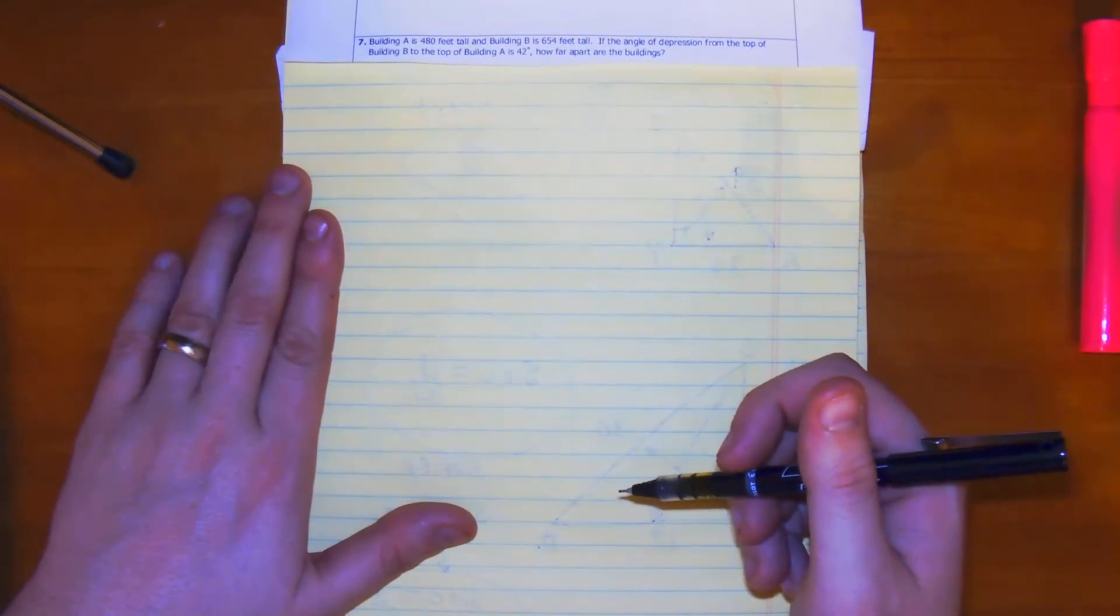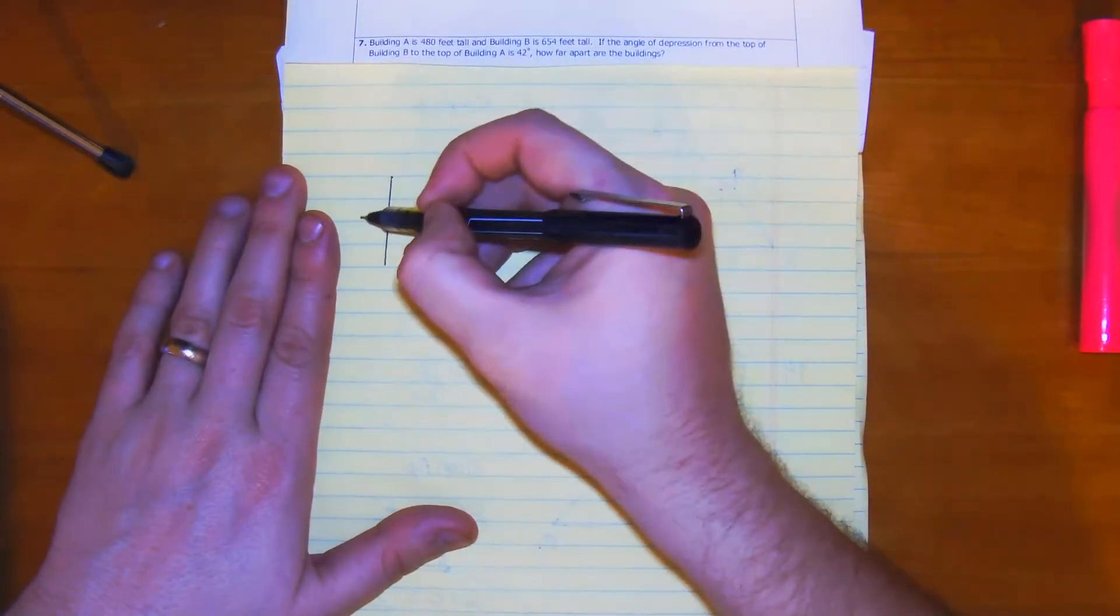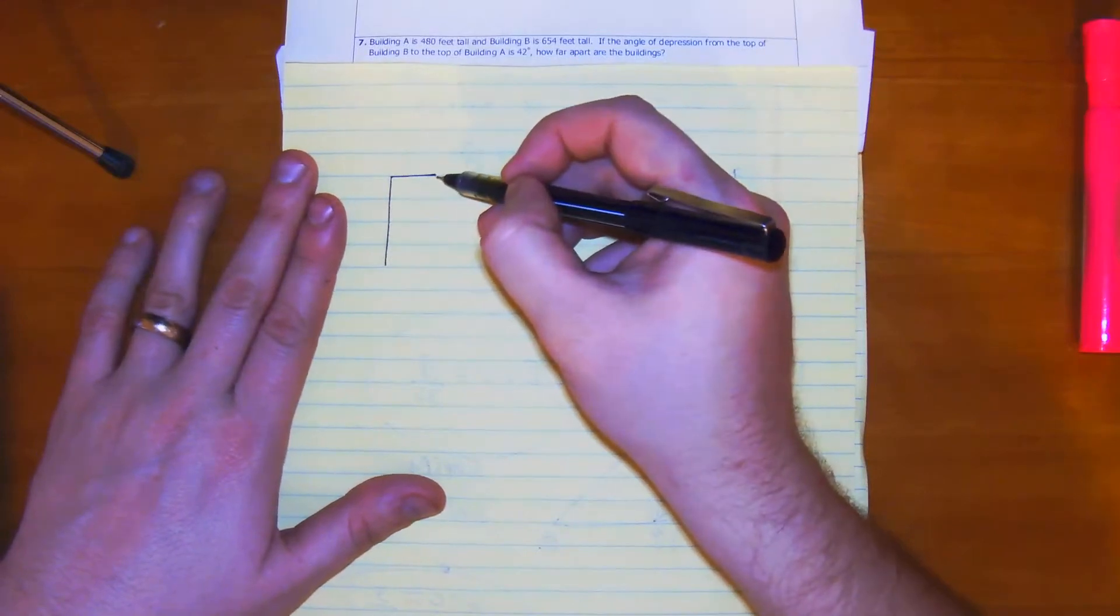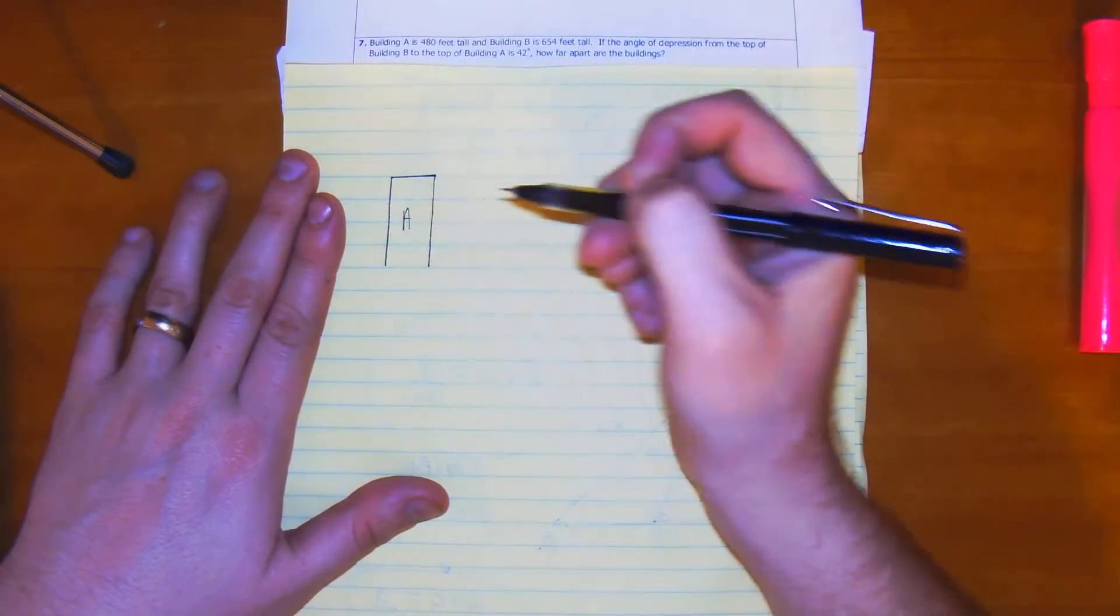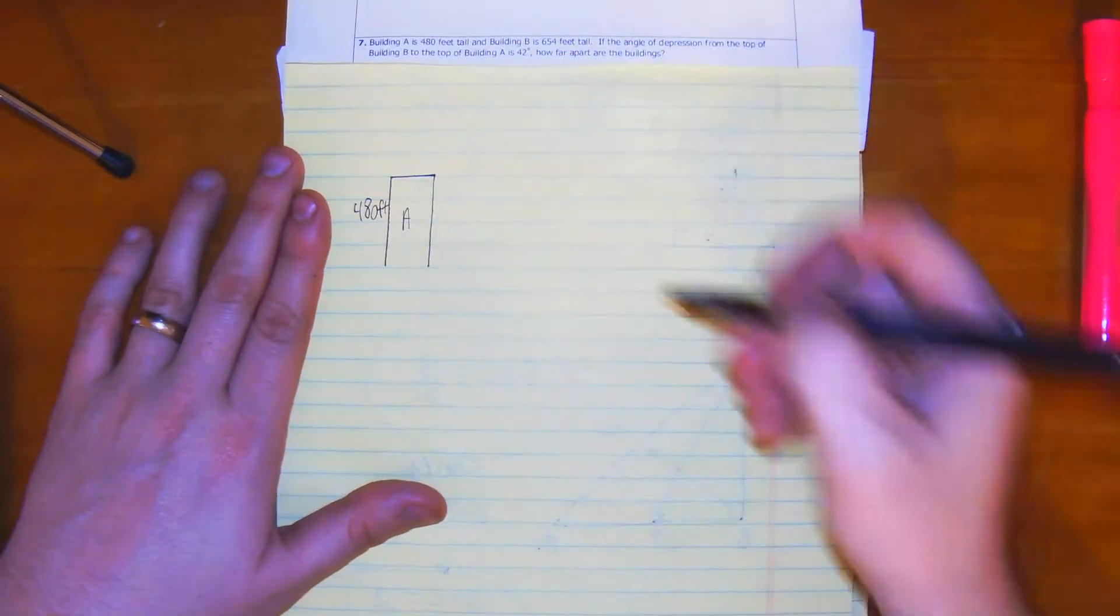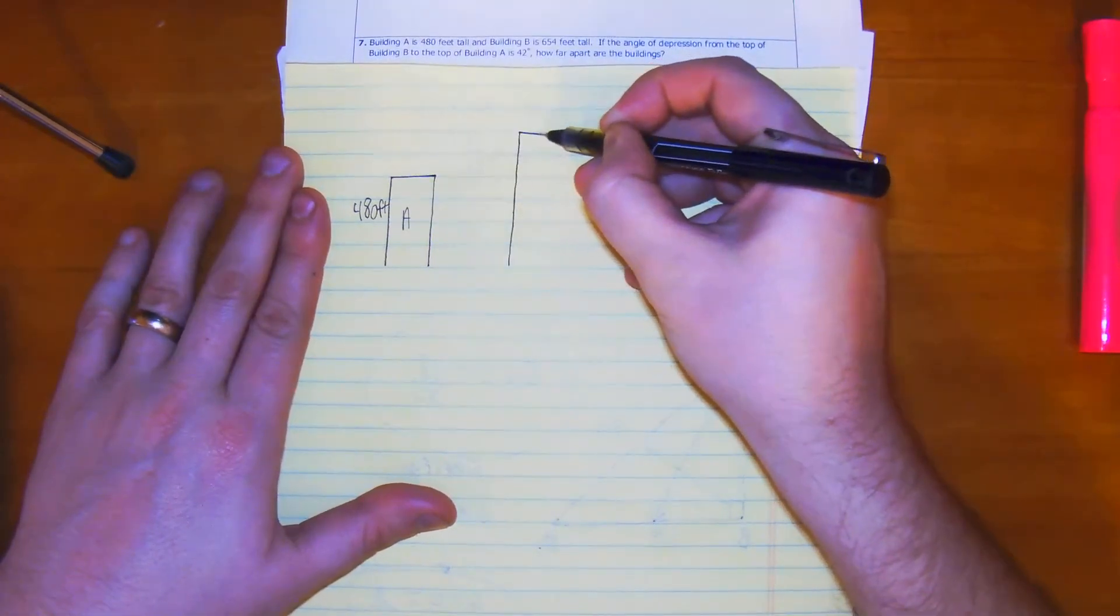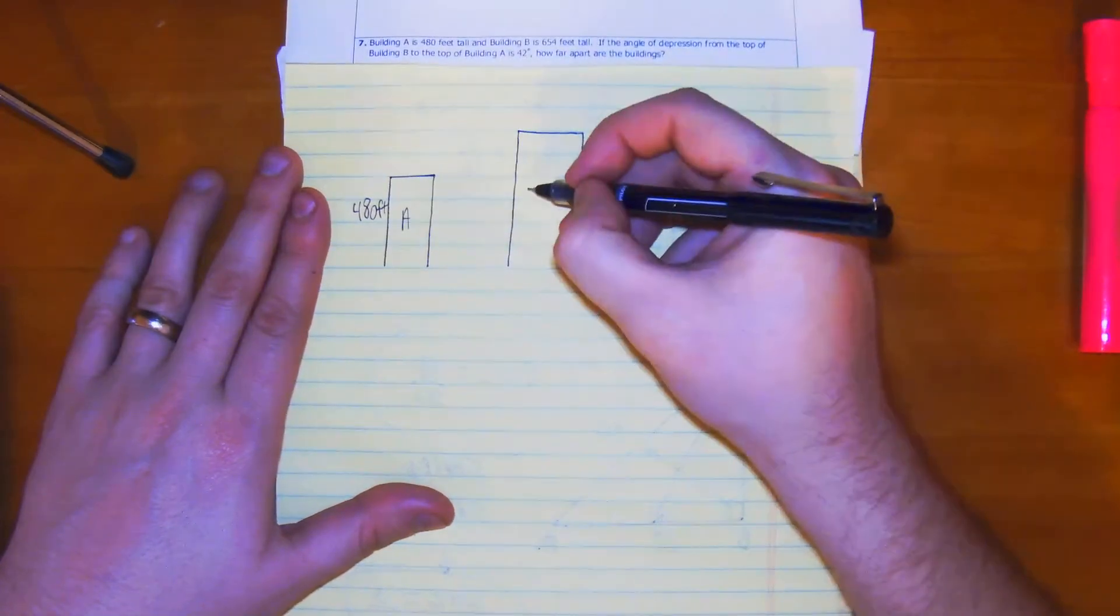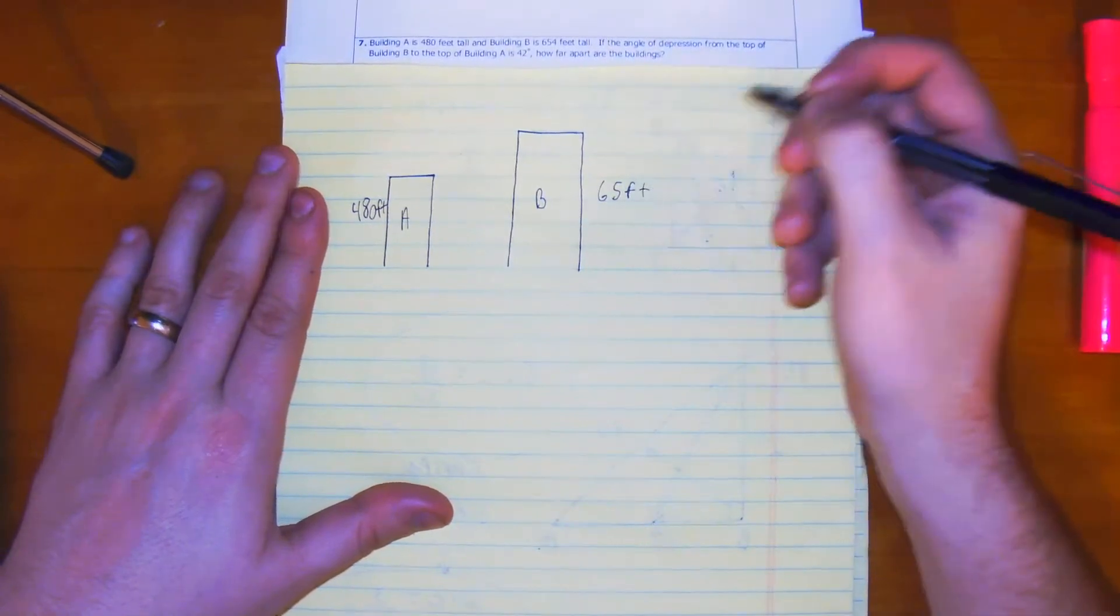We have building A. So this is 480 feet tall, and building B is 654 feet tall.